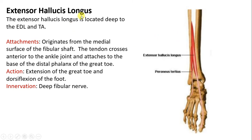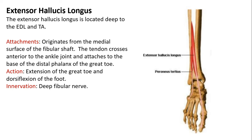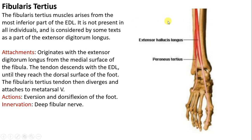Extensor hallucis longus is located deep to the extensor digitorum longus and tibialis anterior. It originates from the medial surface of the fibular shaft below the extensor digitorum longus, crosses anteriorly, runs down, and attaches to the phalanx of the big toe. It acts only on the big toe — it extends and dorsiflexes the big toe. You can perform this on your own body and see the dorsiflexion of the big toe. It is also supplied by the deep peroneal nerve, a branch of the common peroneal nerve.